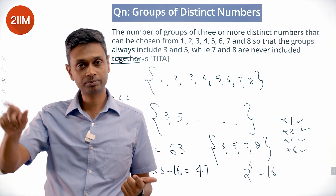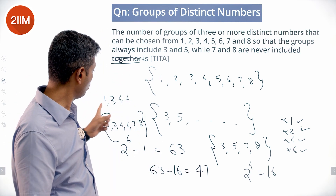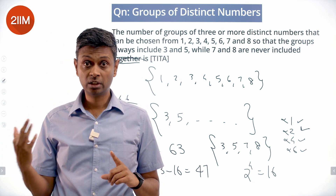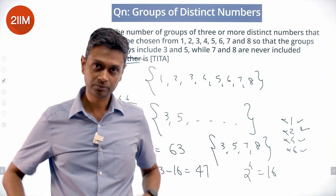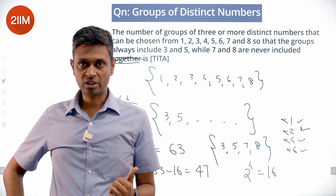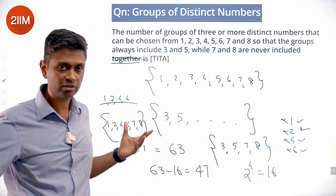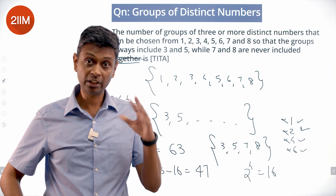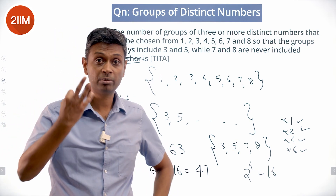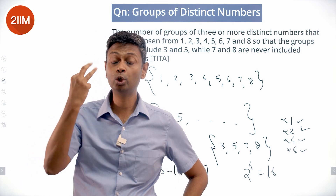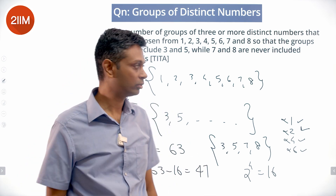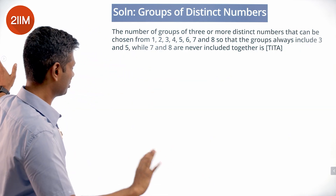47 subsets will have three and five, at least three elements, and will not have seven and eight both together. The other way of doing this is: count everything with one, two, four, six; count everything with seven but not eight; and then eight but not seven. In all of this we need to keep in mind that we do not want to count any sets with fewer than three elements — at least three elements need to be there. That's the other way of going about it, which is also doable.